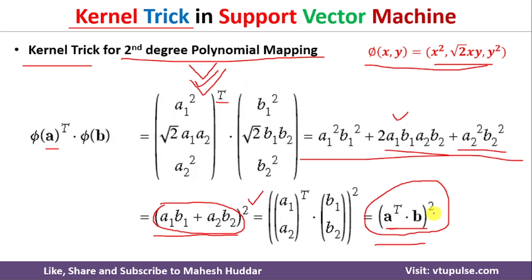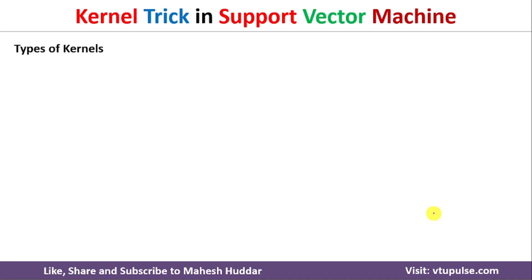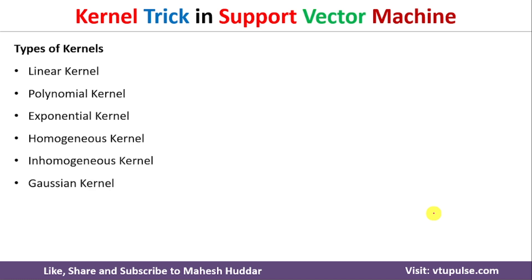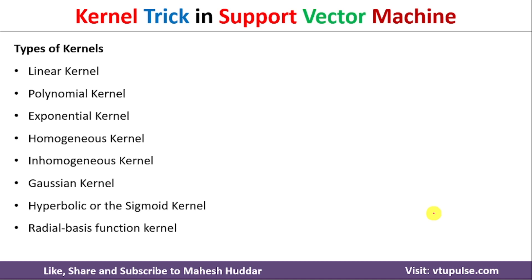Now let us discuss the different kernel types available in SVM. The first one is the linear kernel. We also have polynomial kernel, exponential kernel, homogeneous kernel, inhomogeneous kernel, Gaussian kernel, hyperbolic or sigmoid kernel, and radial basis function kernel, among others.